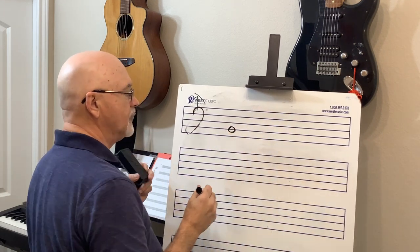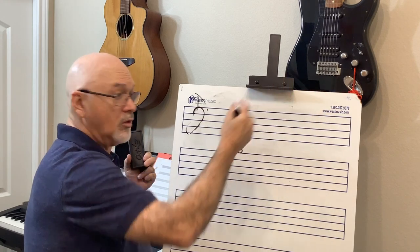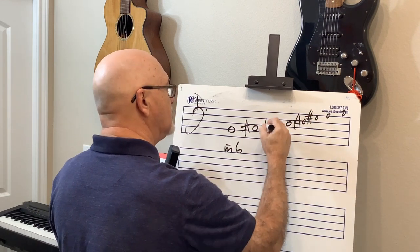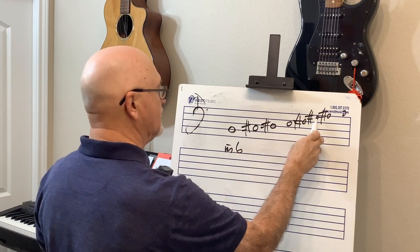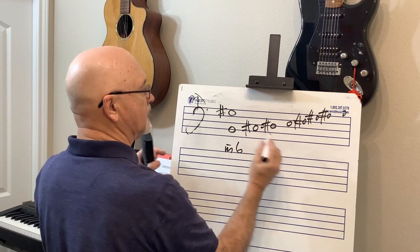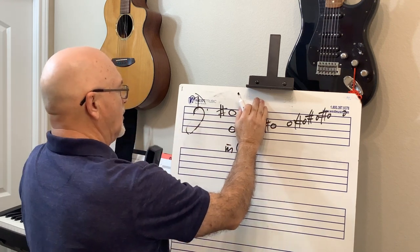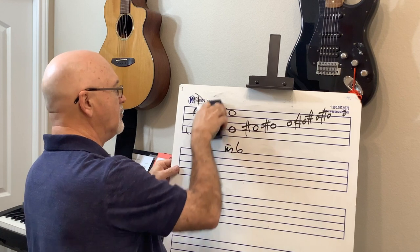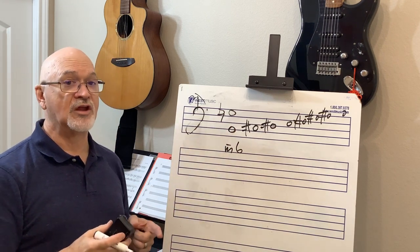From B — a minor sixth. Writing out the key of B: F-sharp, C-sharp, G-sharp, D-sharp, A-sharp. Counting up one through six: G-sharp would be the major sixth. To make it minor, I lower it a half step to G-natural. In the key of B, G-sharp is major sixth, and G-natural is the minor sixth.